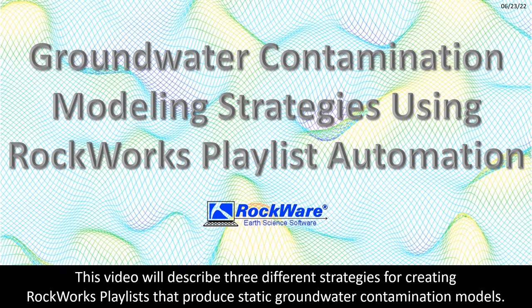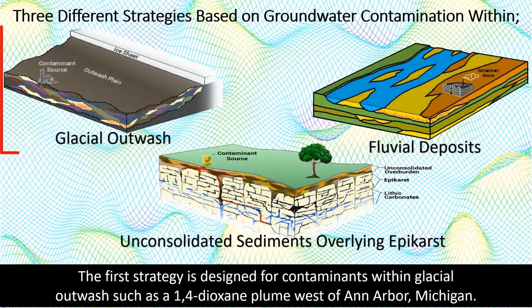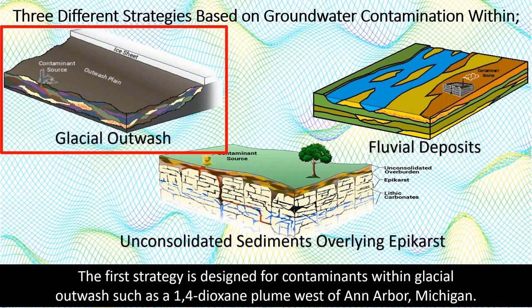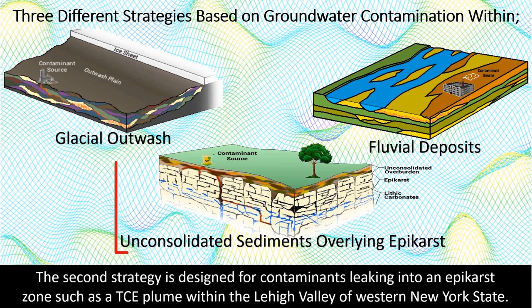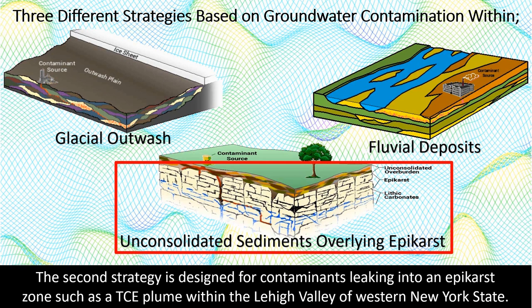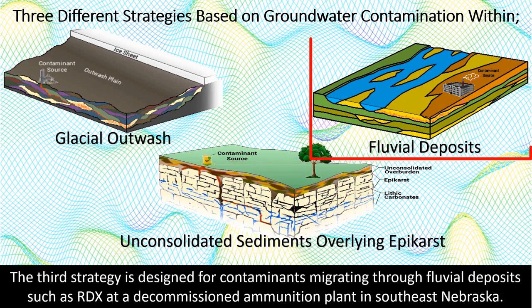This video will describe three different strategies for creating RockWorks playlists that produce static groundwater contamination models. The first strategy is designed for contaminants within glacial outwash, such as a 1,4-dioxane plume west of Ann Arbor, Michigan. The second strategy is designed for contaminants leaking into an epicarth zone, such as a TCE plume within the Lehigh Valley of western New York State. The third strategy is designed for contaminants migrating through fluvial deposits, such as RDX at a decommissioned ammunition plant in southeast Nebraska.